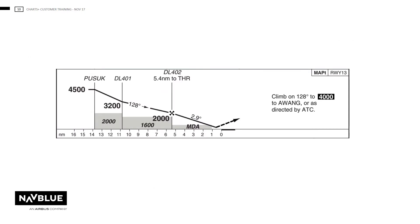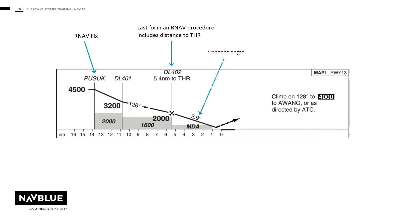Here is an example of the profile for the RNAV procedure. Here is the RNAV fix, written in italic. The last fix on an RNAV procedure, usually at the FAF, will include the distance to the threshold. The descent angle is to be indicated for non-precision approaches in degrees with one decimal. If no official value is given, leave blank.